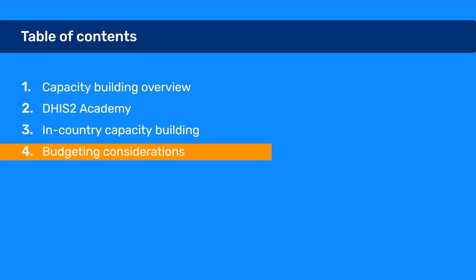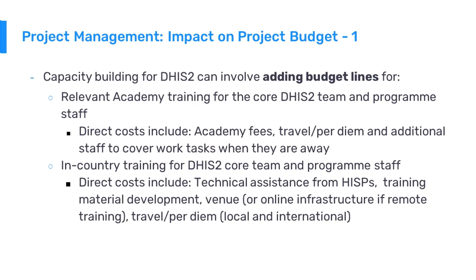To wrap up, let us discuss budgeting principles. Capacity building for DHIS2 can involve adding budget lines for relevant training for the core DHIS2 team and program staff. Direct costs often include academy registration fees, travel and per diem, and additional staff to cover work tasks when others are away attending academies. For in-country training, direct costs can include technical assistance from the HISP, development of training materials, venues or online infrastructure for remote training, and travel and per diem at both the local and international level if HISP team members are brought in to perform the training.